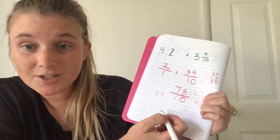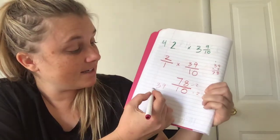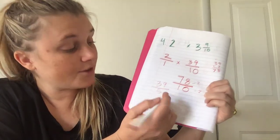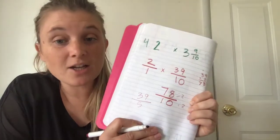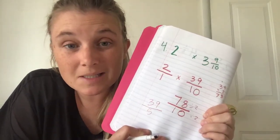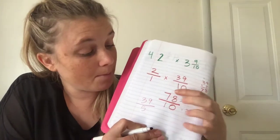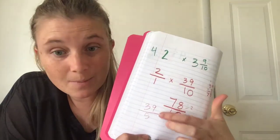What's ten divided by two? Five. So now we have thirty-nine-fifths. Now we can look at that and change it back into a mixed number. Do you remember what we do? How do we change this back into a mixed number?